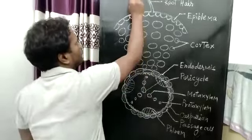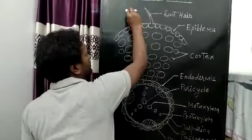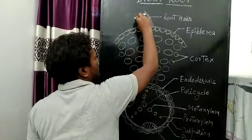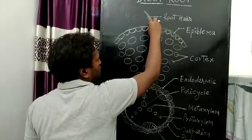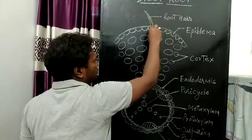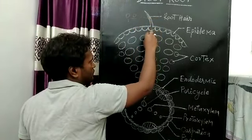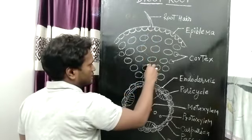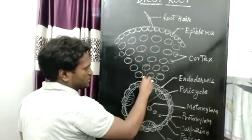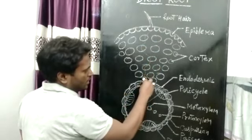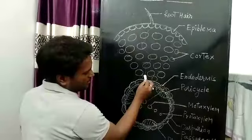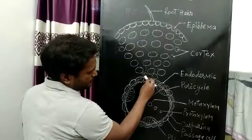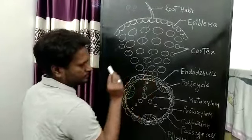Suppose water is absorbed from the soil by the root hairs. This water enters the Cortex cells, moving from one cortical cell to another cortical cell. It reaches the Endodermis, and then through the Passage cell, it enters the Xylem. This is the whole structure of the dicot root.